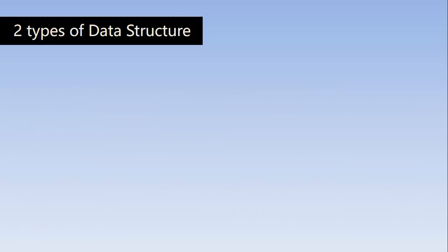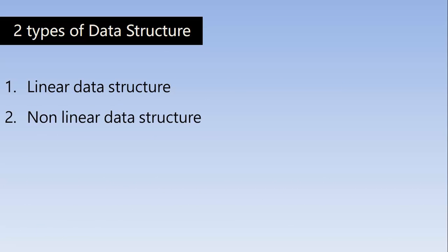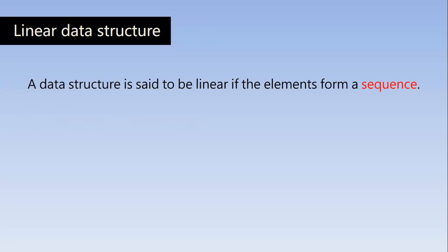So there are typically two types of data structure in computer science. One is the linear data structure and the other one is non-linear data structure. A data structure is said to be linear if the elements form a sequence. For example, we have learned already the array, and the others are stack, linked list, queues. So all these are linear data structures in which data is going to be in a sequence. We are going to store the data elements in order or in a sequence. And we are going to follow the same sequence or order while retrieving it back or traversing.